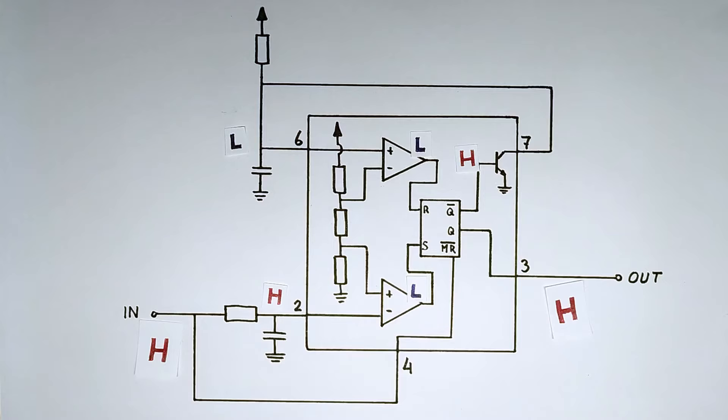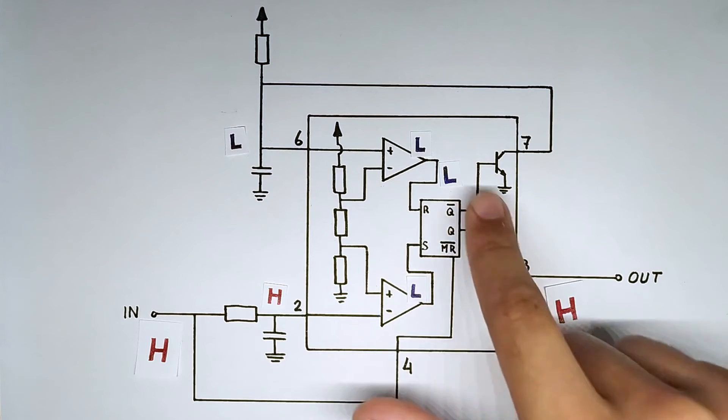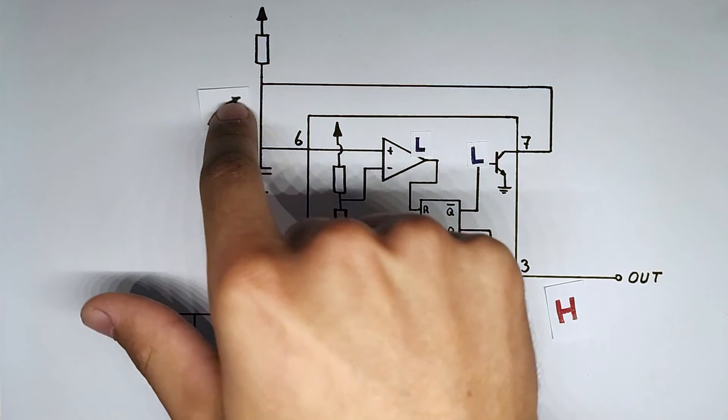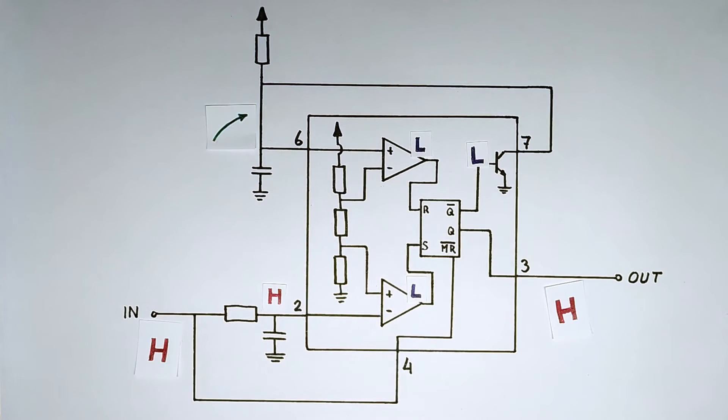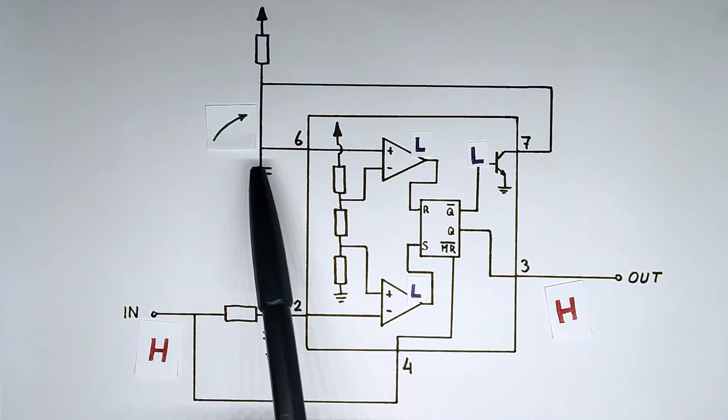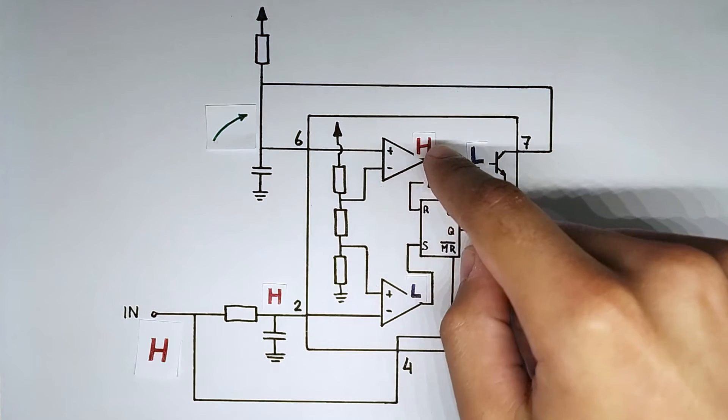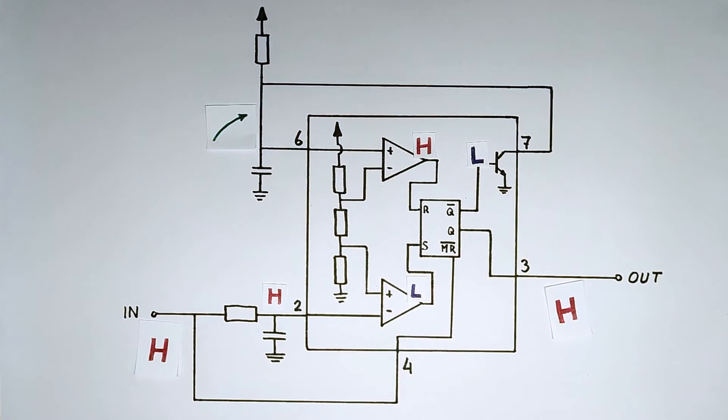At this point though, the Q inverted also changes, becomes low, which means the transistor isn't on anymore and the capacitor here starts charging. Now at a certain point the voltage here will pass two-thirds VCC and that will bring the output also high and this will reset the flip-flop and bring the output low.